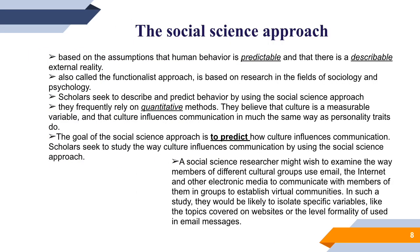The first is the social science approach, which is based on the assumption that human behavior is predictable and that there is a describable external reality. Also called the functional approach, it is based on research in the fields of sociology and psychology. Scholars seek to describe and predict behavior using this approach and frequently rely on quantitative methods. These scholars believe that culture is a measurable variable and that culture influences communication in much the same way as personality traits do. The goal is to predict how culture influences communication.